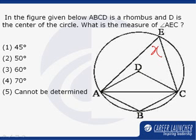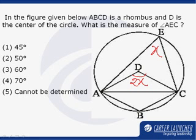Since D is the centre of the circle, we can say that angle ABC is nothing but twice of x, so this angle comes out to be 2x. And in the rhombus, since ABCD is a rhombus and the opposite angles of a rhombus are always equal, so angle B will also be equal to 2x.